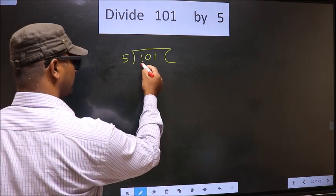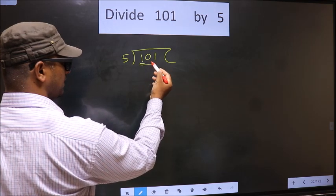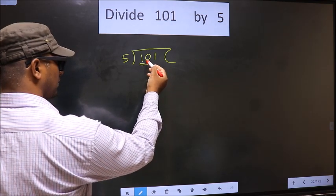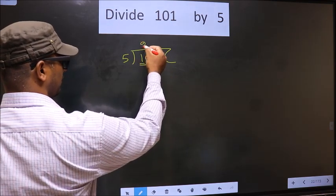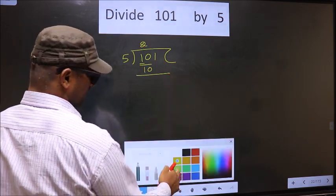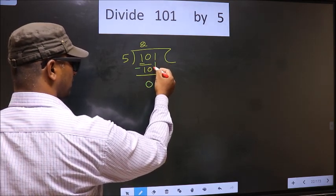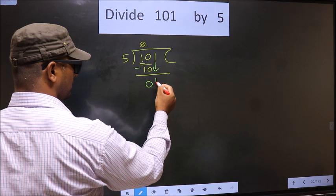Now here the first number is 1, which is smaller than 5. So we take 2 numbers, that is 10. When do we get 10 in the 5 table? 5 times 2 is 10. Now you subtract 10 minus 10, which is 0. Now you bring down the next number, that is 1.